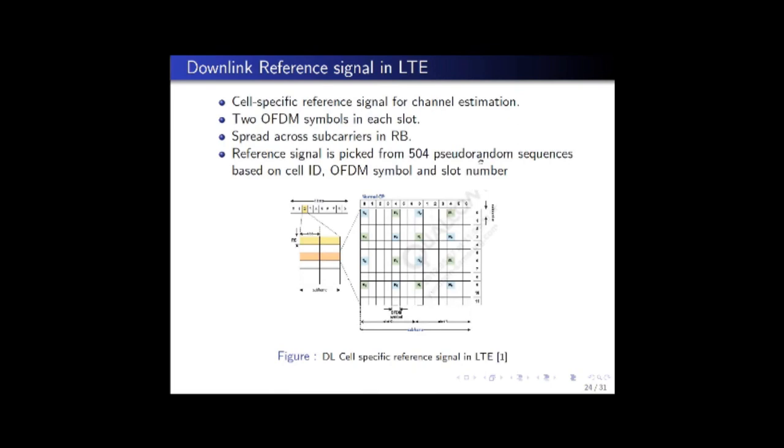The receiver has prior information of these reference signals and utilizes these reference symbols to interpolate the channel attenuation gains for different subcarriers and different times.